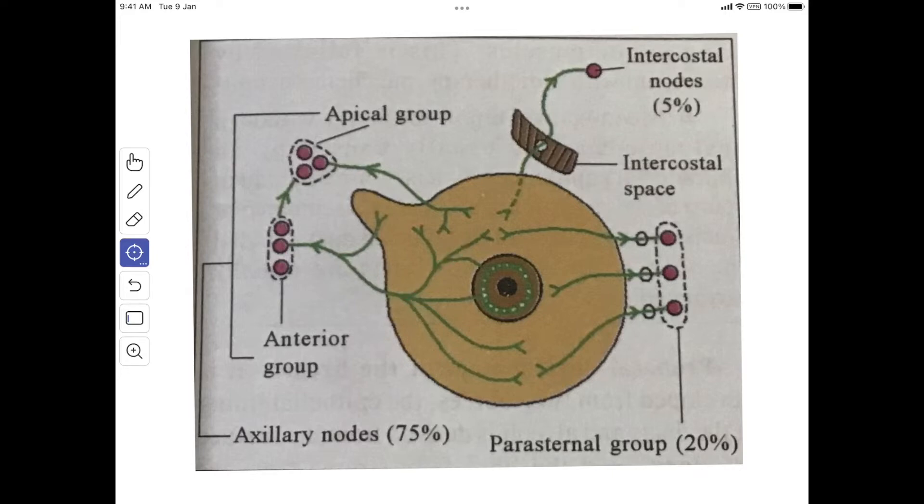The lymph vessels form plexuses in the interlobar connective tissue and walls of the lactiferous ducts. These plexuses join with the subareolar plexus of Sappey, which collects lymph from the areola and nipple. Some lymphatics from the deep surface join the plexus on the underlying deep fascia. In healthy breast, such connections do not form the usual pathway to regional nodes; they only form an alternative route when normal channels are obstructed by cancer cells.